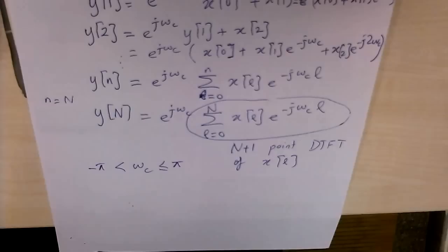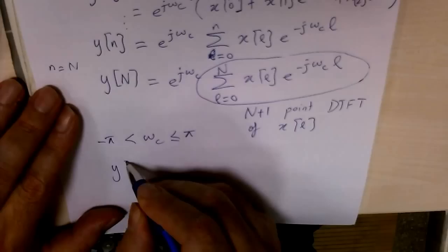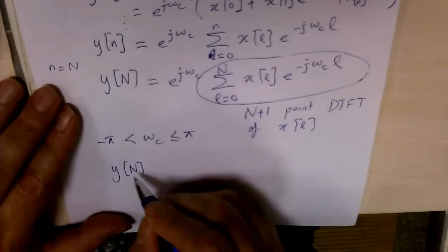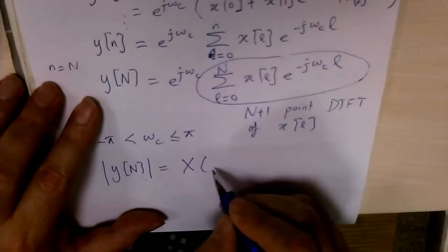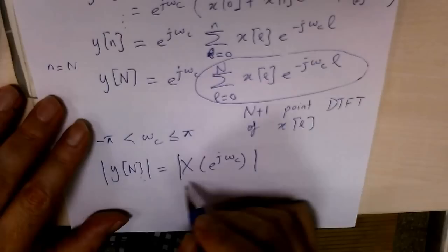Now, if you want to calculate the magnitude of the DTFT, you simply take the magnitude of both sides, so |Y[N]| becomes |X(e^{j*omega_c})|. If you want X(e^{j*omega_c}) itself, you have to multiply Y[N] by e^{-j*omega_c}.